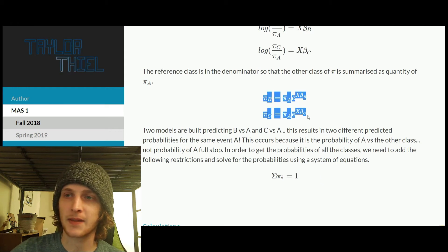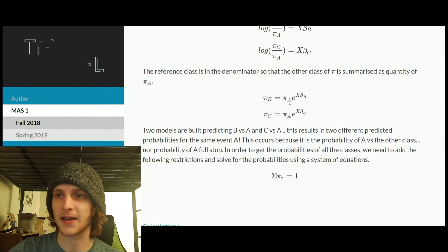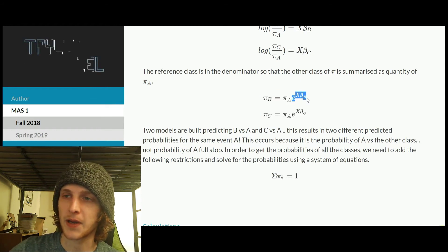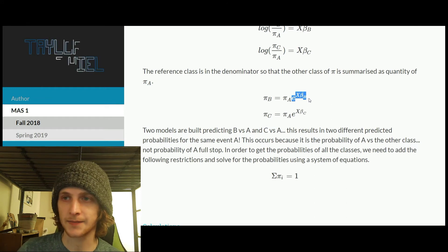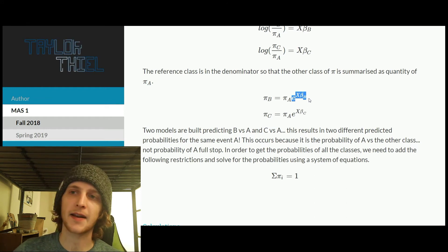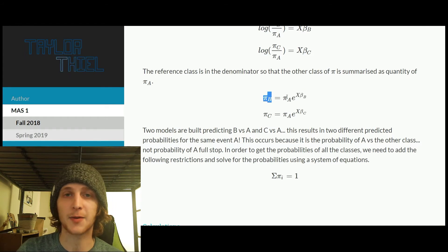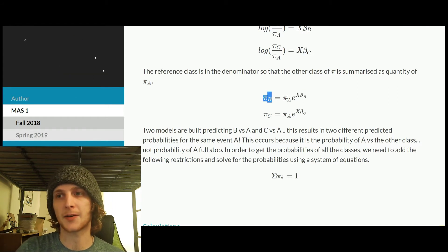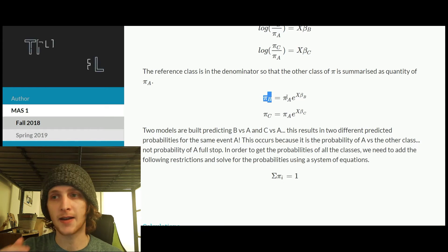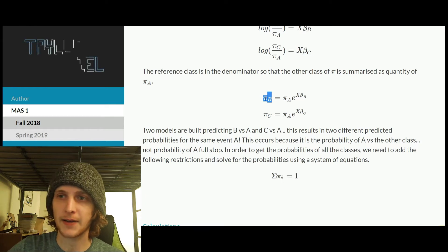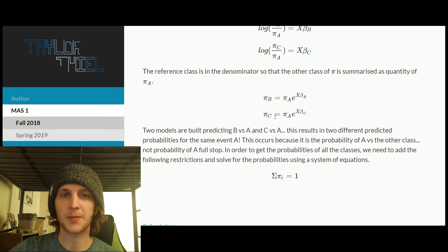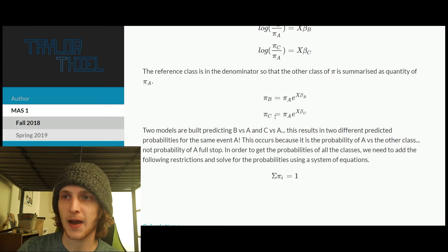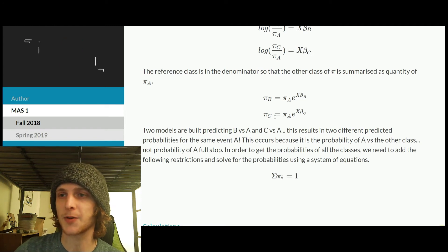And then we can use a system of equations to then solve for each of them, because what we're going to get from these two equations is relativities to our reference class. So we're going to get something like, we have our model, so E to the linear predictor, it's going to result in a number. And then we can say our predicted probability for B is some factor relative to the predicted probability of A. And then once we have that for all the different classes, so here we only have three, but this could be for as many different values of your target variable you have of that categorical variable. Everything's going to be in reference to that one class.